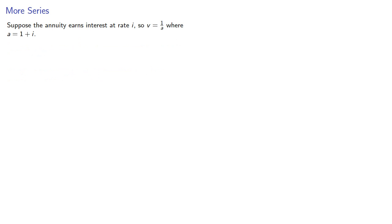Suppose the annuity earns interest rate i, so v is one over a, where a is one plus i. Then a double dot angle infinity at interest rate i is the infinite sum of the powers of v. And here we use the infinite geometric series summation formula.